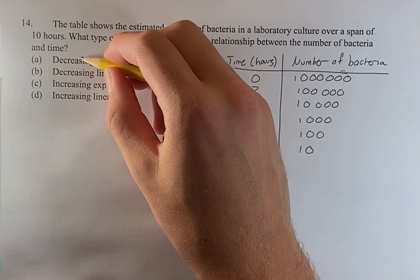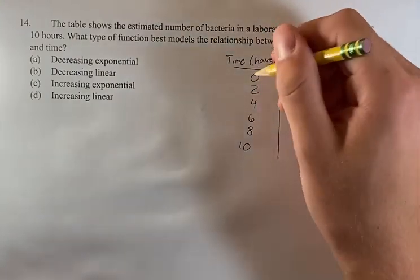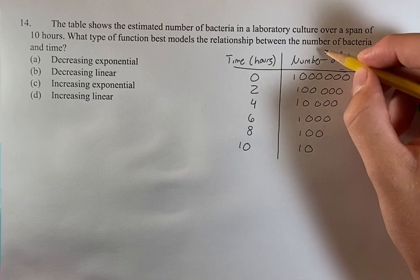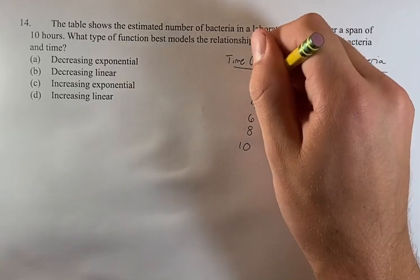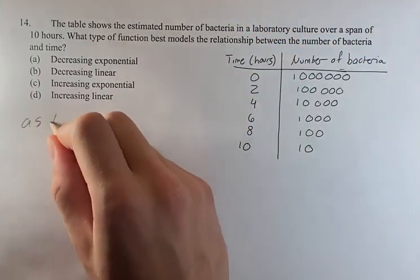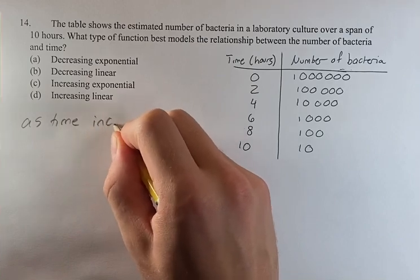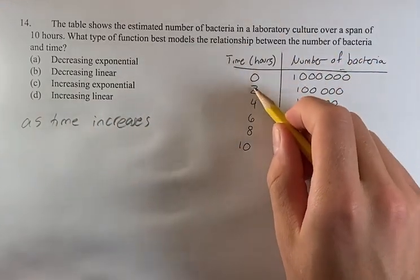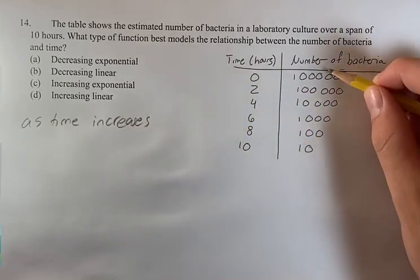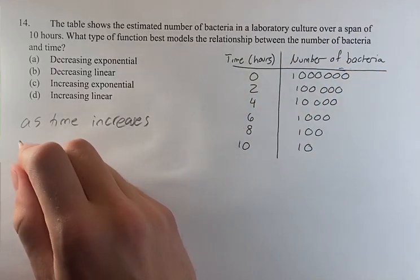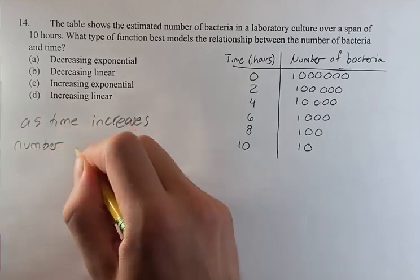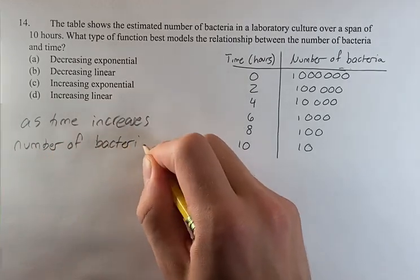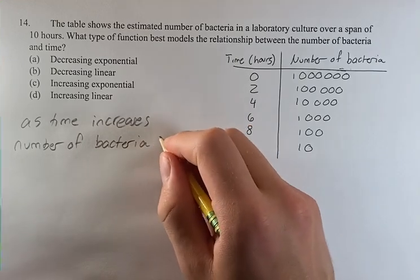First, we're going to look at whether it's decreasing or increasing. As one variable increases, does the other one increase or decrease? As time increases, note that the number of bacteria decreases. So when we go from zero to two — that's an increase in time in the positive direction — the number of bacteria decreases. That means this is a decreasing function, a decreasing relationship.